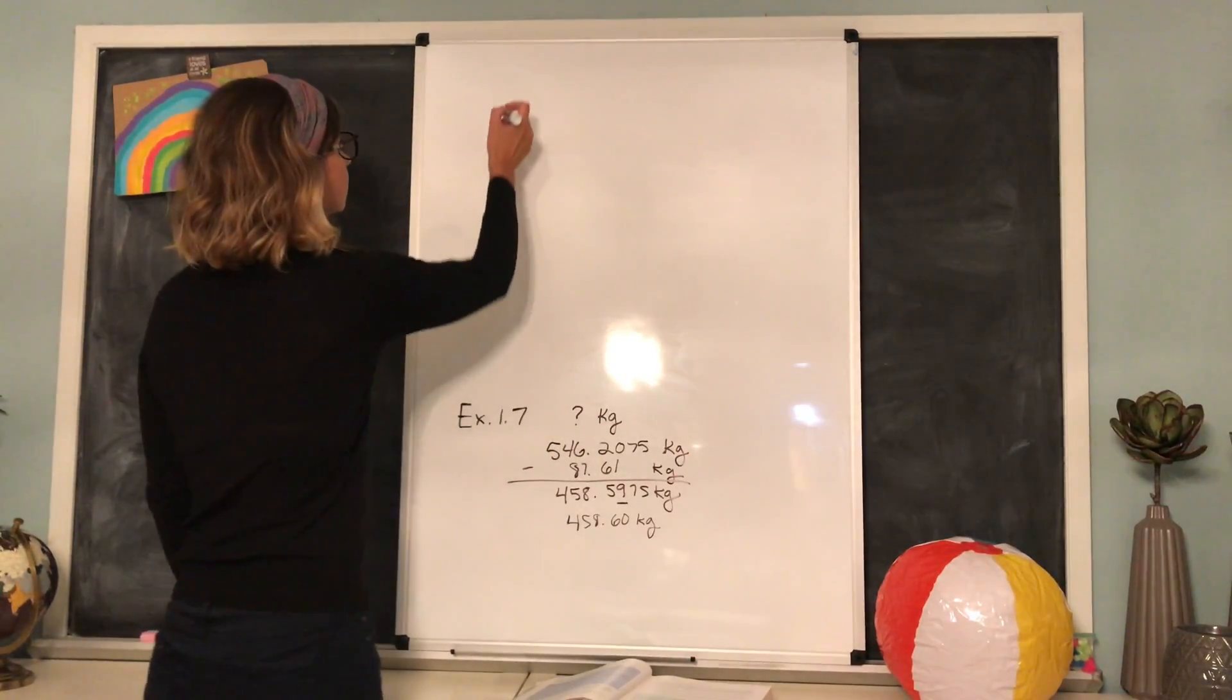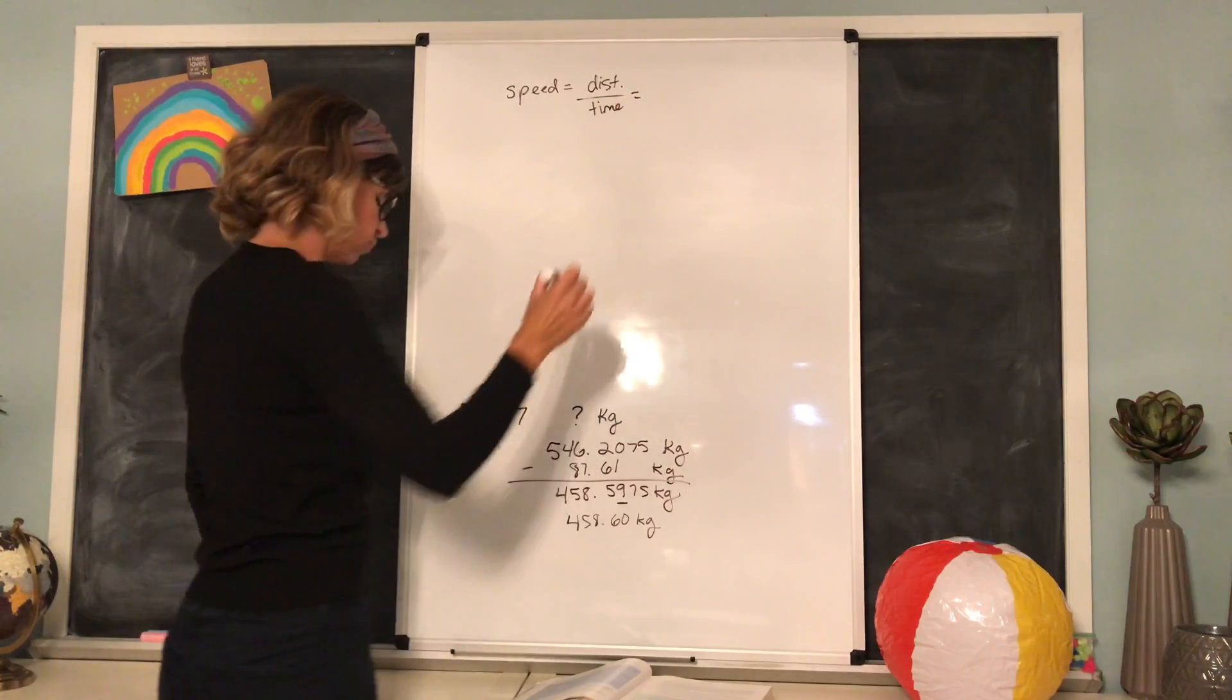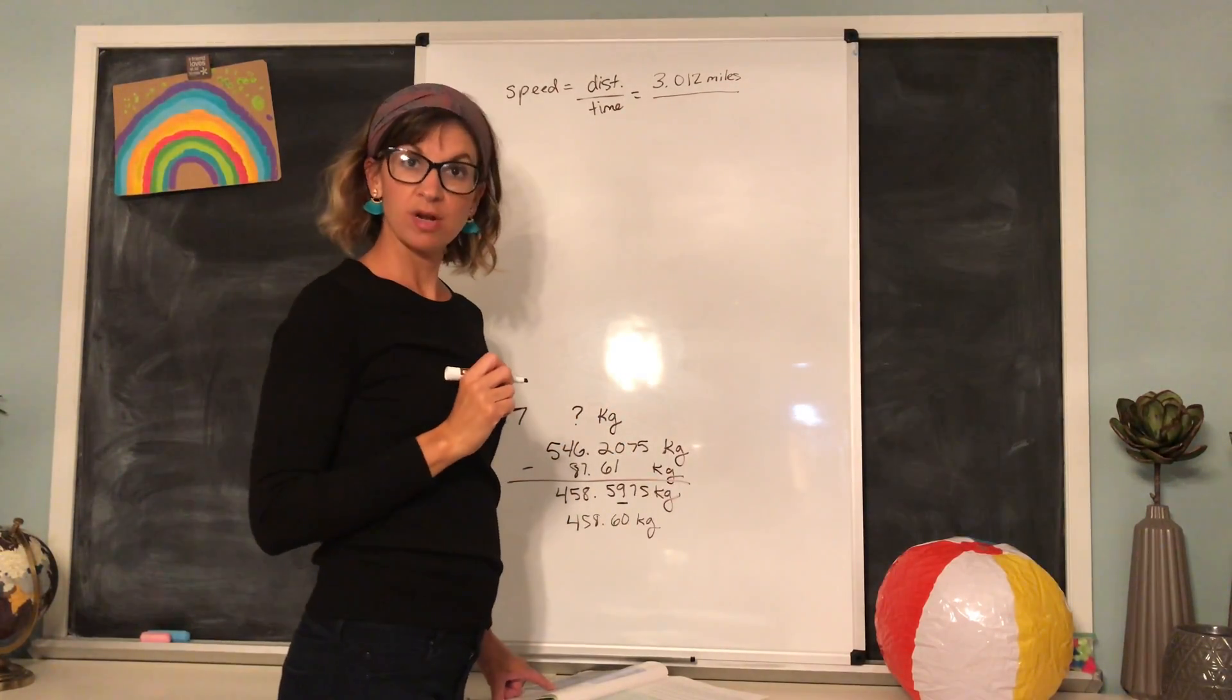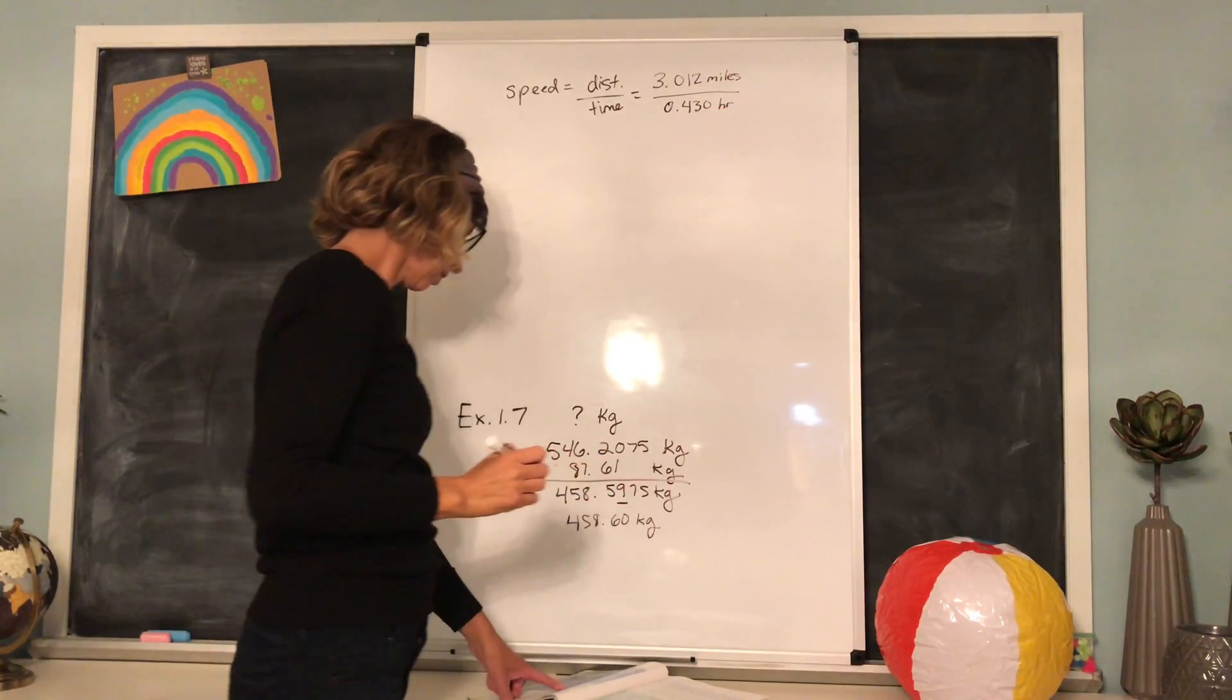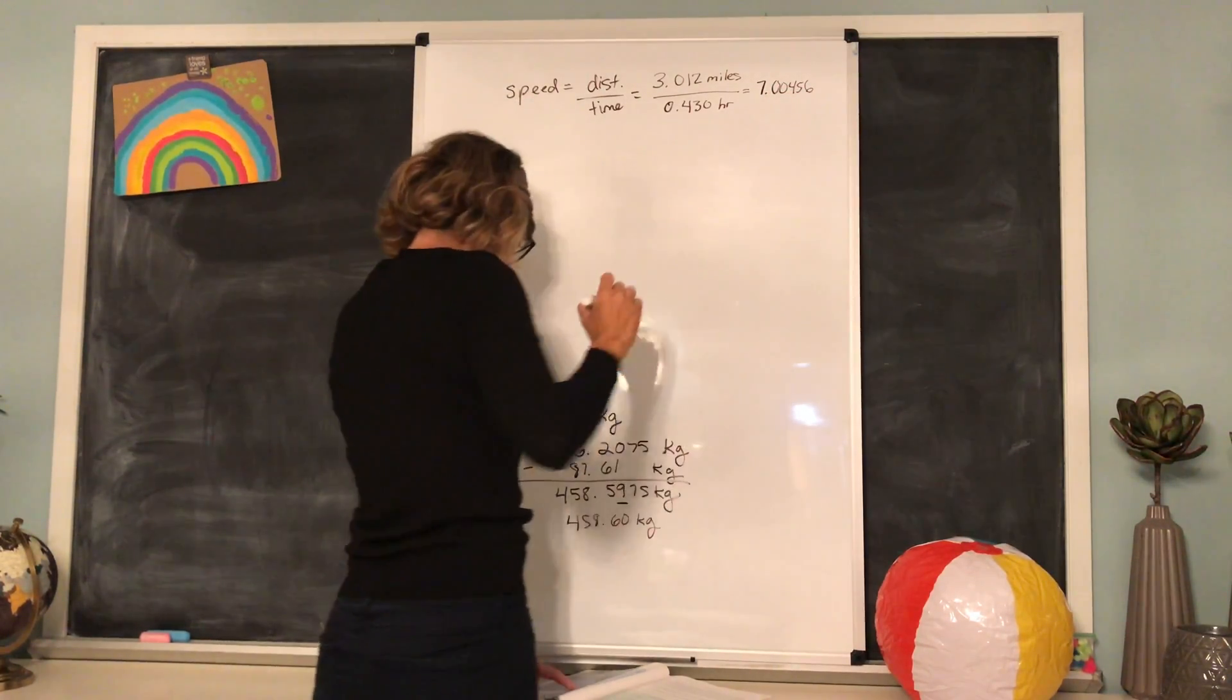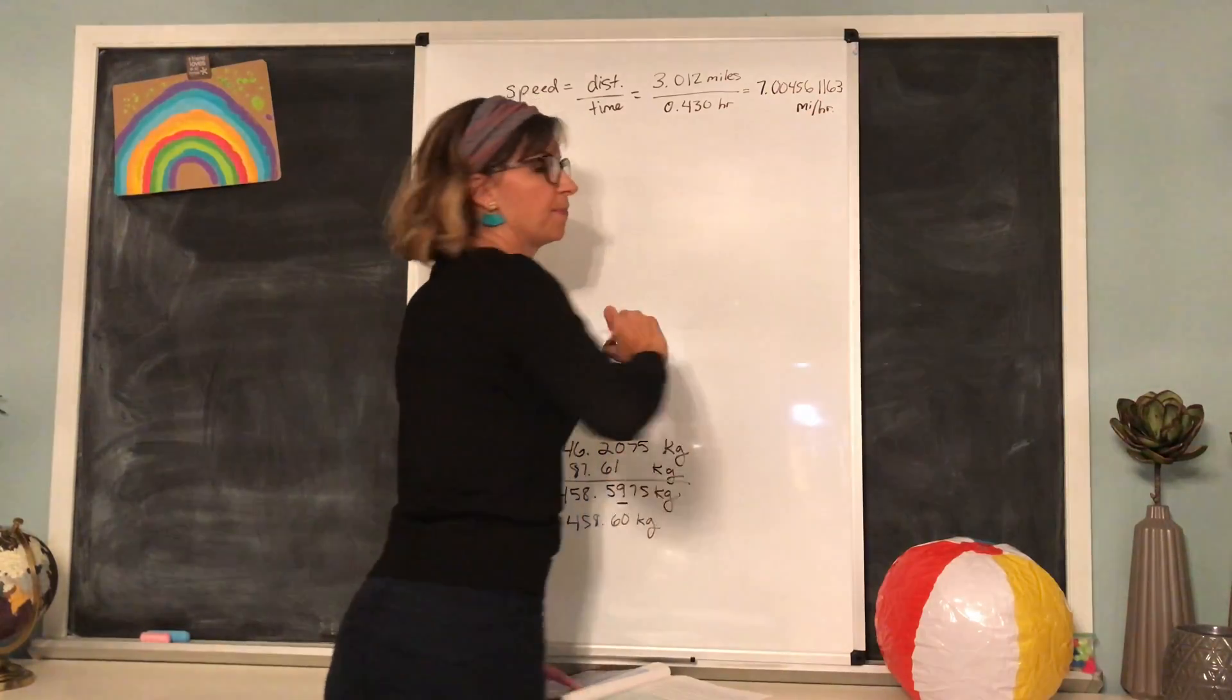Speed equals the distance run divided by the time. Distance divided by time. So in this problem we are looking at 3.012 miles divided by the time it took to run those three miles, 0.430 hours. So we divide that out in our calculators and we get 7.004561163, and our units would be miles per hour.